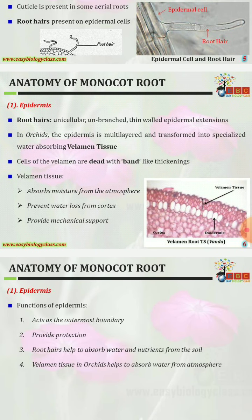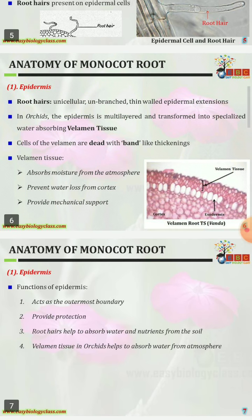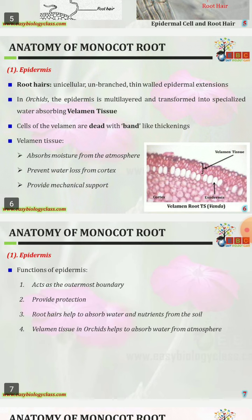Root hairs are unicellular, unbranched, thin-walled epidermal extensions. In orchids, the epidermis is multilayered and transformed into a specialized water-absorbing velamen tissue. Cells of the velamen are dead with band-like thickenings, and velamen tissue absorbs moisture from the atmosphere.